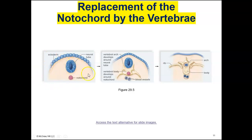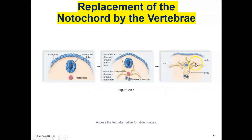This illustration shows you the replacement of the notochord with vertebrae. In the cross-section on the left, you can see the neural tube, which is the nerve cord, with the notochord supporting it underneath — as you would see in lancelets and sea squirts. On the right, you see one vertebra surrounding the nerve cord; the spinal cord is inside, and the bones that surround it are the vertebrae.